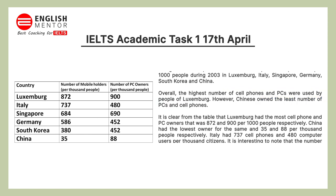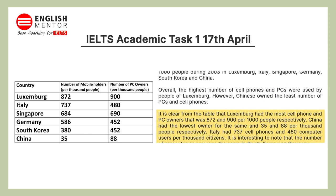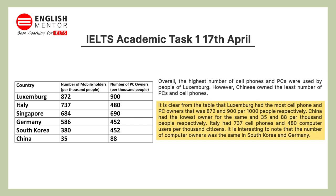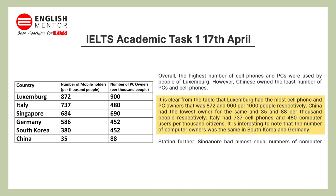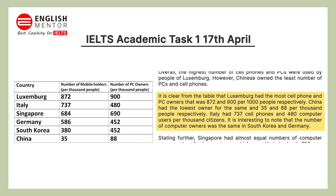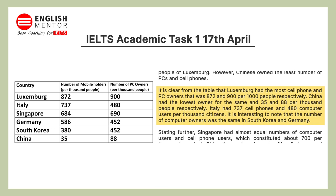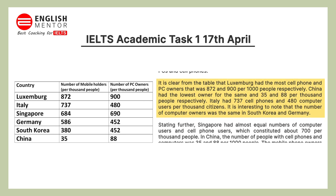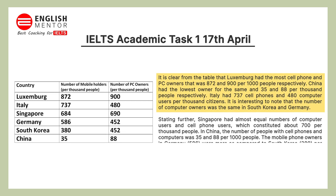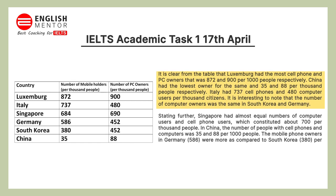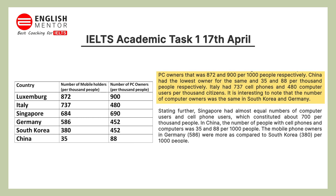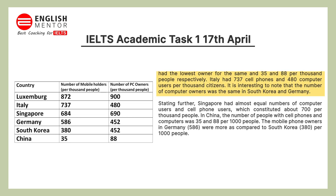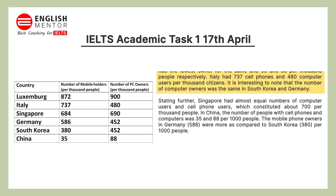In the next paragraph you can write: it is clear from the table that Luxembourg had the most cell phone and PC owners, that was 870 and 900 per thousand people respectively. China had the lowest owners for the same, that was 35 and 88 per thousand people respectively. Italy had 337 cell phones and 480 computer users per thousand citizens. It is interesting to note that the number of computer owners was the same in South Korea and Germany.